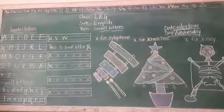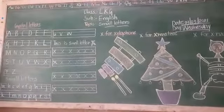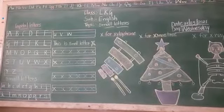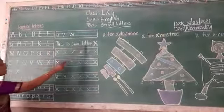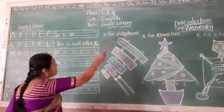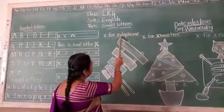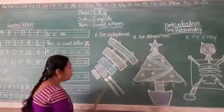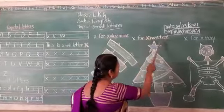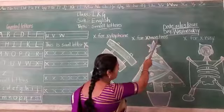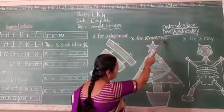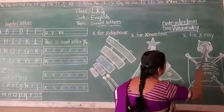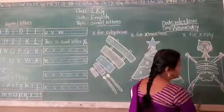Today's topic is small letter x. Now I am going to teach how to write small letter x in phonics. This is small letter x. X for Xylophone - X, Y, L, O, P, H, O, N, E - Xylophone. X for Xmas - X, M, A, S, T, R, E, E - Xmas. X for X-ray - X, R, A, Y - X-ray.